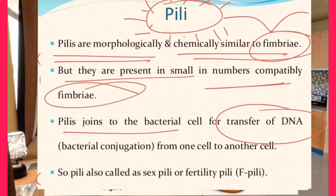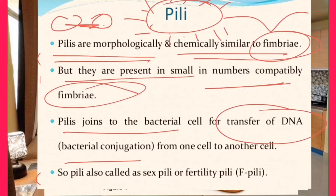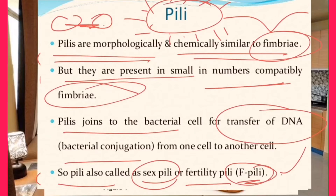Pili are responsible for the transfer of DNA genetic material. This transfer process is called bacterial conjugation — from one bacterial cell to another. Bacteria join via pili and transfer their genetic material from one cell to another. That is why they are called sex pili, or fertility pili, or F-pili. F-pili is a very common term. Do not confuse pili with fimbriae — they look similar but have different functions. Flagella, fimbriae, and pili all have separate functions, different numbers, and different sizes.